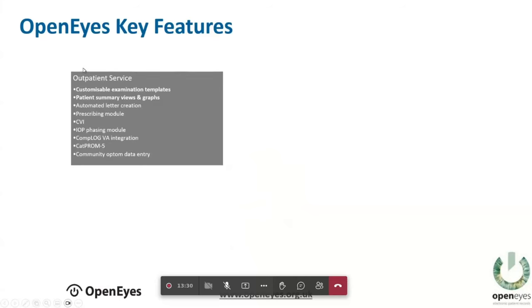Running through the key features: in outpatients there are many different examination templates you can configure for every different subspecialty, or you can have generic ones you adapt as you go. There are very good summary views for patients to show visual acuity trends or intraocular pressure trends. Letters can be created automatically from the examination so you don't have to type or dictate anything. It can also do prescriptions, CVI registrations, PROMs like the CAT PROM, and there's a portal for capturing post-op reviews from community optometrists.